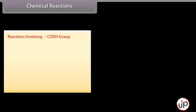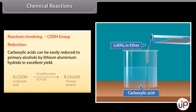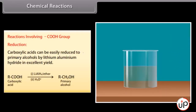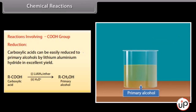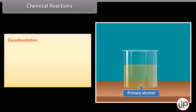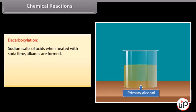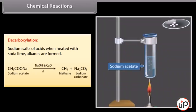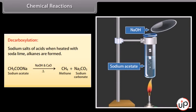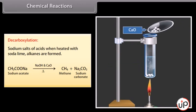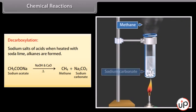Reactions involving the carboxylic group. Reduction: carboxylic acids can be easily reduced to primary alcohols by lithium aluminium hydride in excellent yield. Decarboxylation: sodium salts of acids when heated with soda lime form alkanes. When sodium acetate is heated with sodium hydroxide and calcium oxide, it forms methane and sodium carbonate.